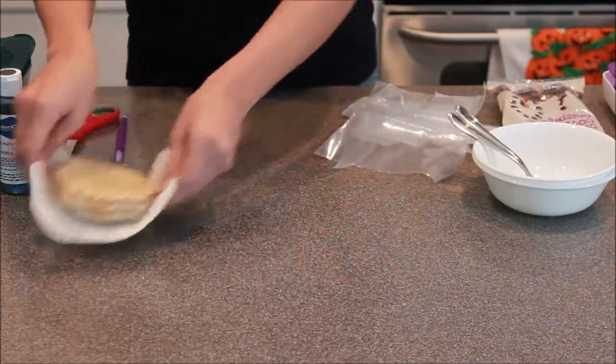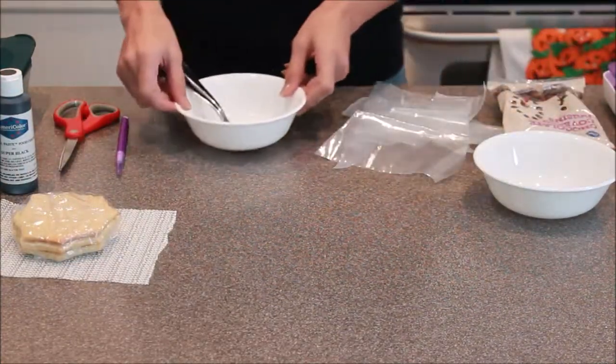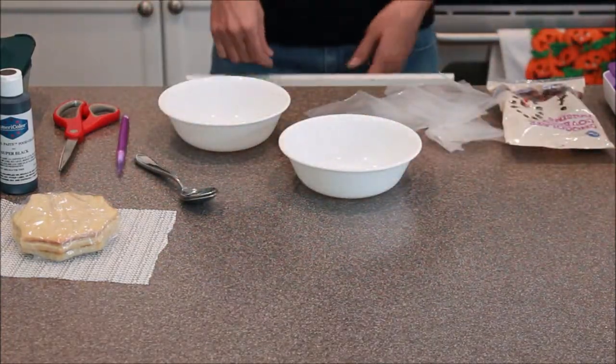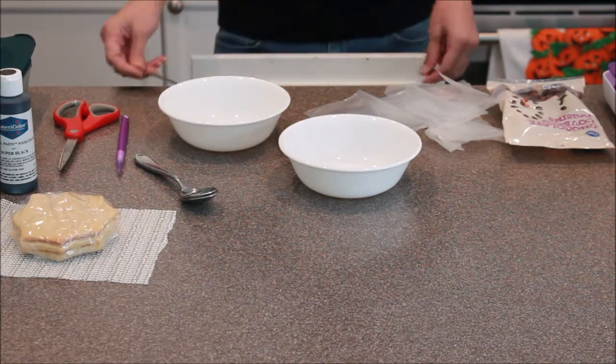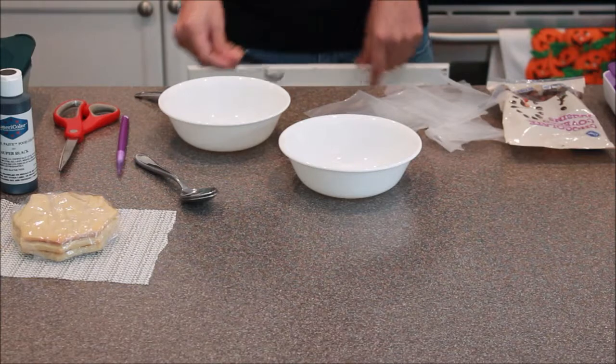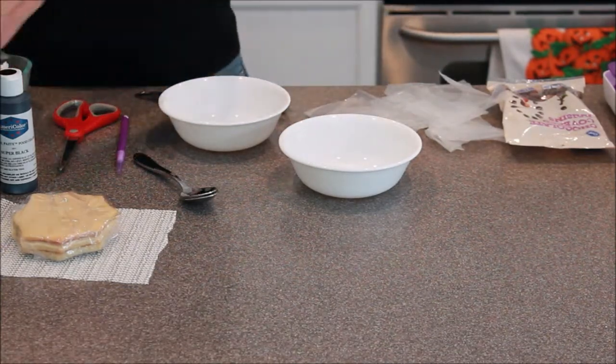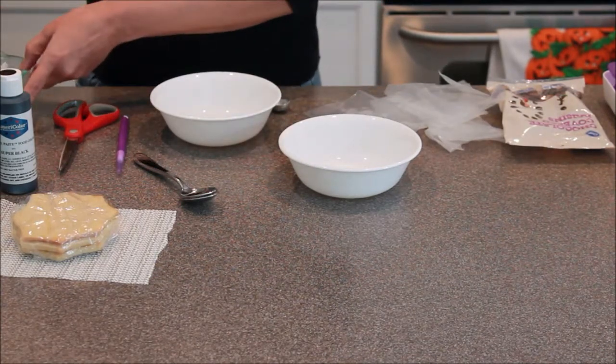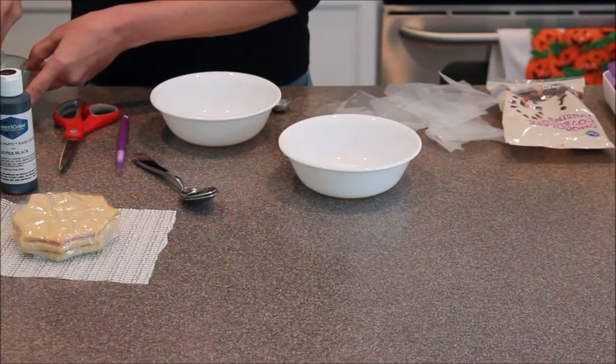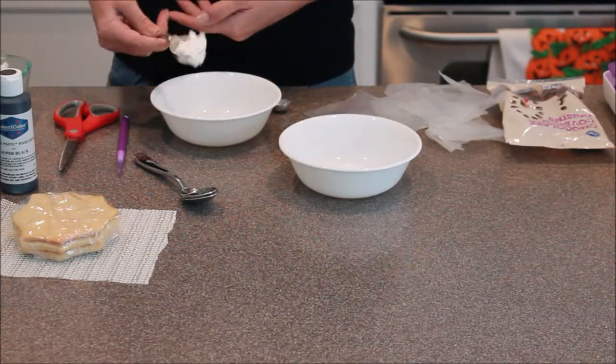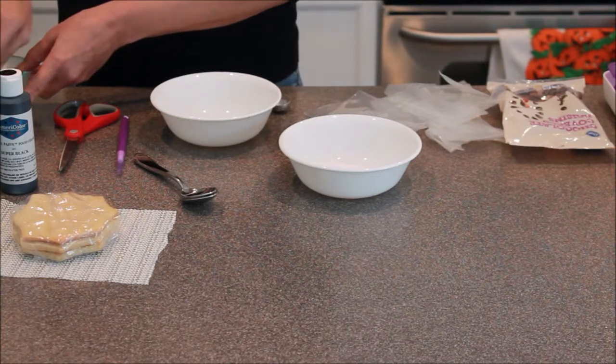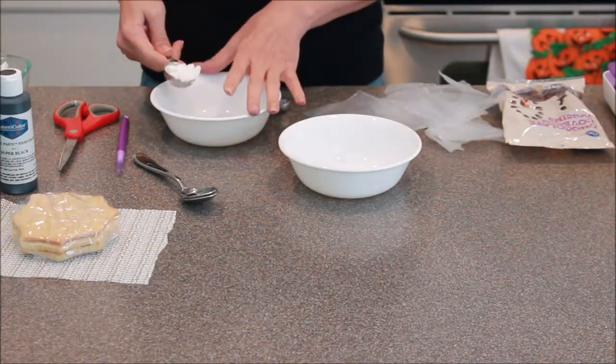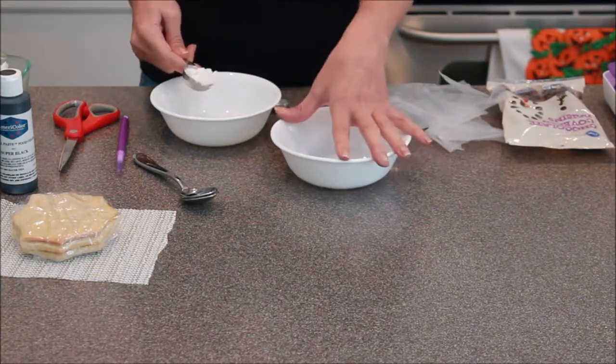So the first thing that we're going to do is get our icing ready. Now the icing is fairly easy. The consistency that it makes is very thick and that's okay because we're going to add water and thin it up a little bit. So we're just going to take our measuring spoon and I use a tablespoon at a time. You can see it's very thick. It doesn't like to move a whole lot and that's what you're wanting. So we're going to put in three tablespoons of icing in one bowl and two in the other bowl.